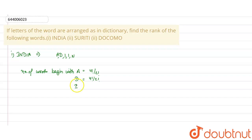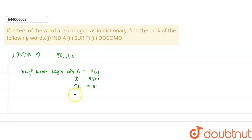Now we want I in the first position. After I, A comes first alphabetically. So the remaining arrangements give 3 factorial. We already have one I fixed, leaving only one I remaining, so no division needed. We don't want A after I, so we move to D.